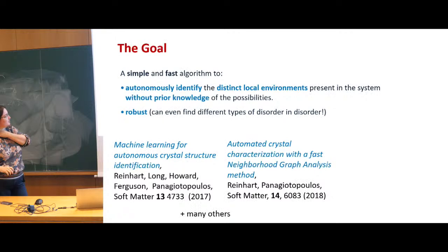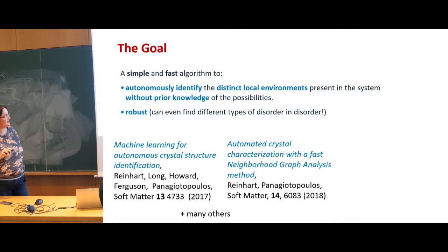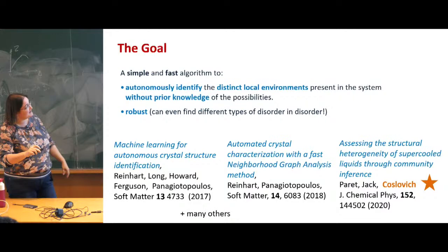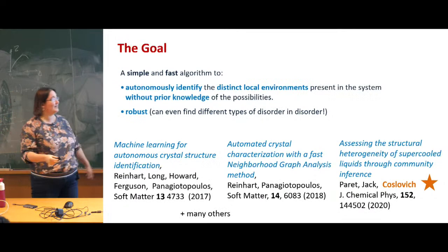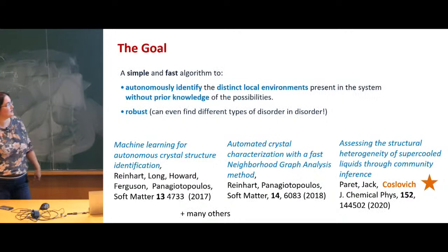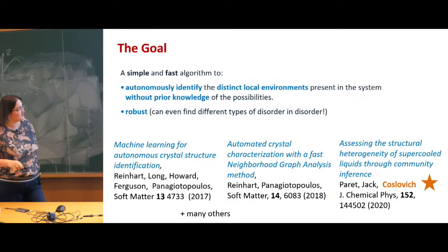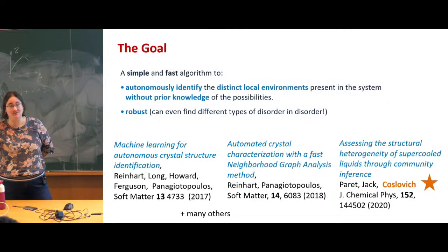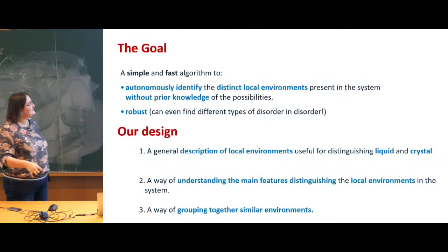There's many people who have tried to address this question. Some of the earliest work was around 2017 by the group of Pangiotopoulos, who made significant contributions with algorithms for autonomous crystal structure identification. The original one was very slow; they sped it up, but they're still using relatively complex descriptions of environments. Simultaneously, someone in the audience today — Daniele Koslovich — has been addressing whether we can use these kinds of algorithms in the context of glassy systems, looking at assessing structural heterogeneity of supercooled liquids through community inference.